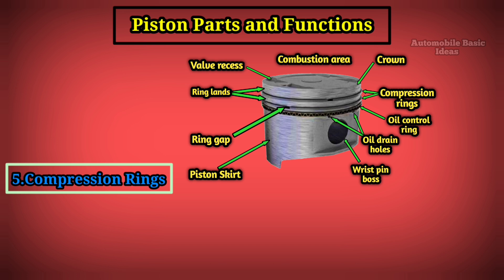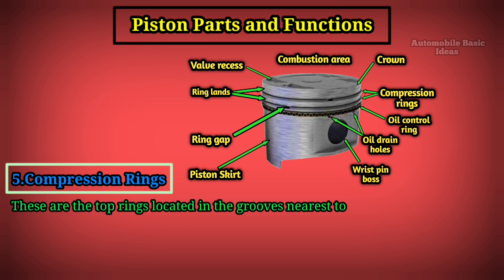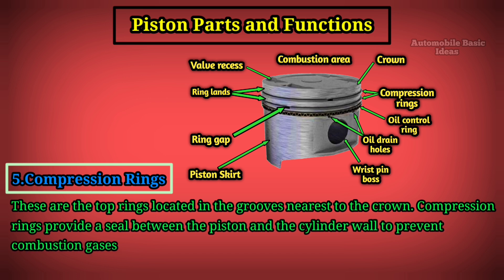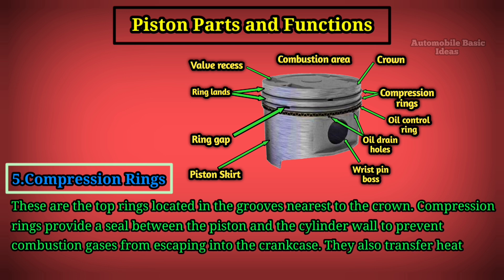Compression Rings: These are the top rings located in the grooves nearest to the crown. Compression rings provide a seal between the piston and the cylinder wall to prevent combustion gases from escaping into the crankcase. They also transfer heat from the piston to the cylinder wall.